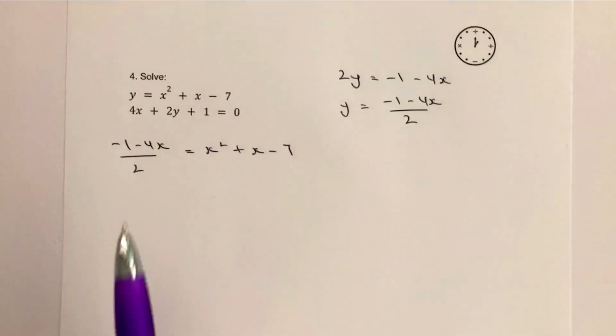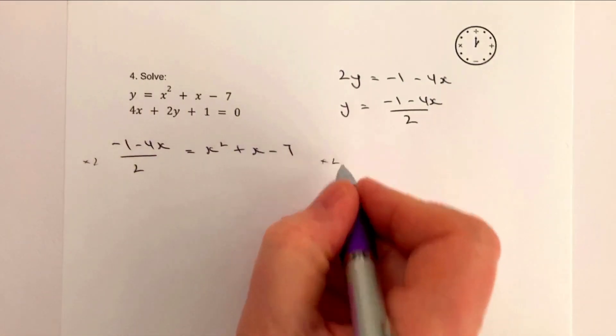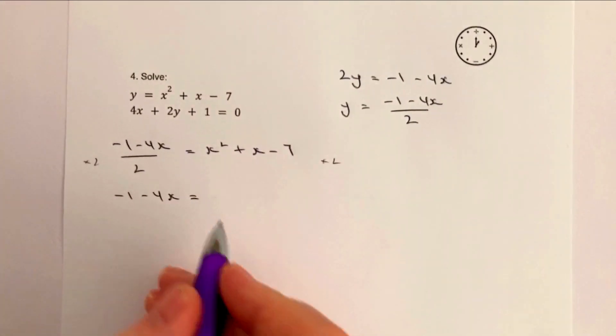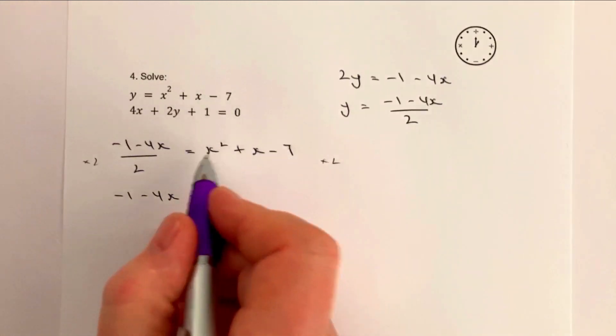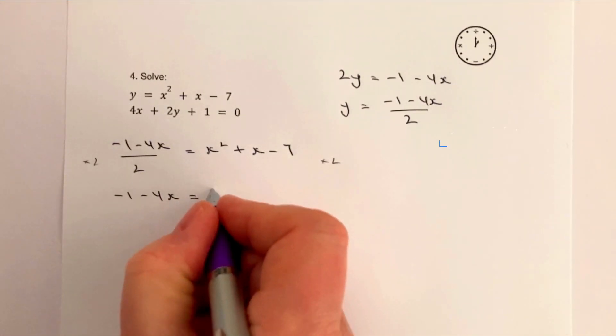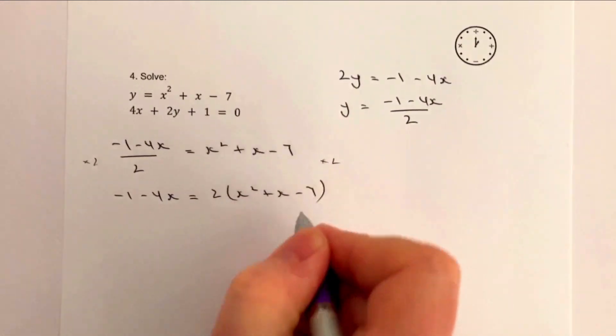Well the first thing I'm going to do is get rid of this 2. So if I multiply both sides by 2, what I'm going to end up with is minus 1 minus 4x equals, and this lot is all going to be multiplied by 2. So therefore I'm going to get 2 times x squared plus x minus 7.